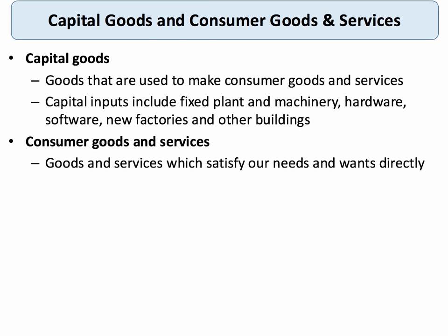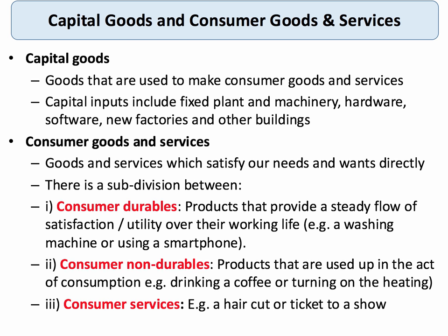Consumer goods and services are the things which we buy and consume which help to satisfy our changing needs and wants directly. We make a distinction between different types of consumer goods.